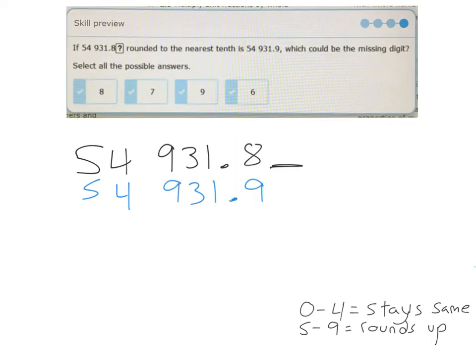This last example says, if 54,931.8X, rounded to the nearest 10th is 54,931.9, which could be the missing digit? Select all possible answers. So which of these would work?